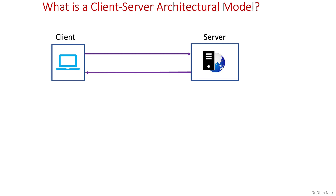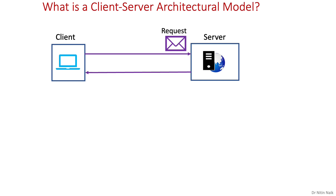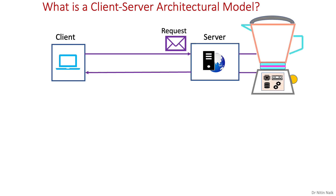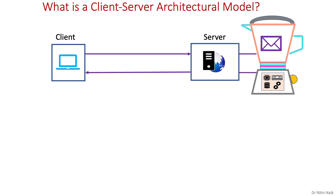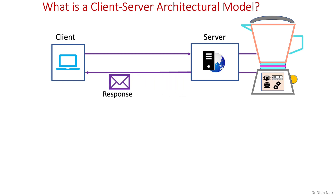The client machine or process sends a request to the server machine or process for various services and resources. The client normally provides basic presentation services. However, it could also provide some processing-related services depending on the application area. The server hosts, delivers and manages most of the services and resources to be consumed by the client. The server machine or process receives the request from the client, then processes it and sends it back to the client.